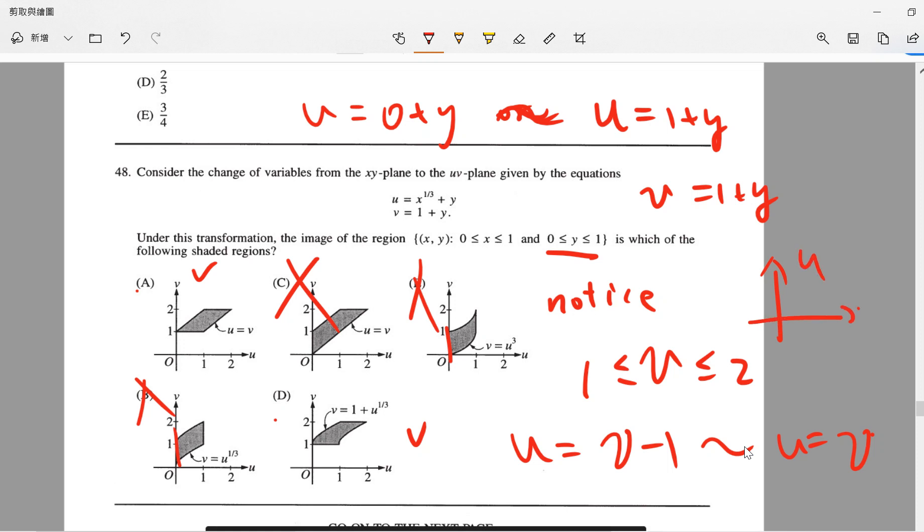So basically your graph contains some parts that u equal to v. And remember that from any slice, u should be linear, u is a function linear in v.